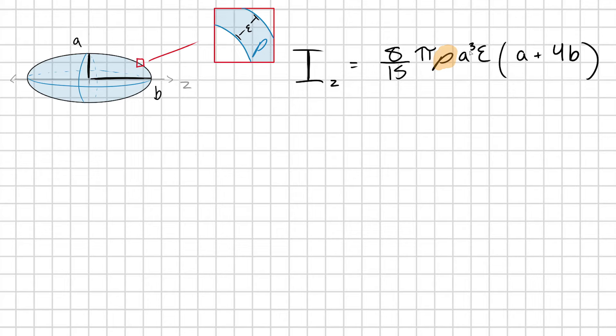But what we really want to do is get rid of this ρ parameter, because I just want to look up the mass of a football and tell you what the moment of inertia is approximately. Let's not write everything in terms of mass density. Let me introduce that this spheroid has some surface area I'll call capital S.